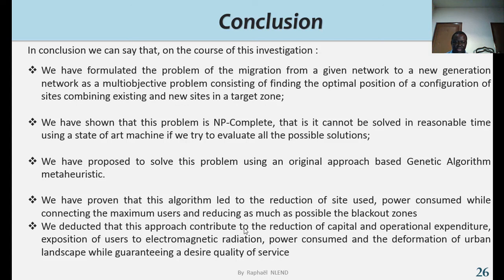We have proposed to solve this problem using an original approach based on genetic algorithm using metaheuristics. We have proven that this algorithm led to the reduction of sites used, power consumed while connecting the maximum users and reducing as much as possible the blackout zones. We deducted that this approach contributes to the reduction of capital and operational expenditure, exposition of users to electromagnetic radiation, power consumed and the deformation of urban landscape, while guaranteeing a desired quality of service.